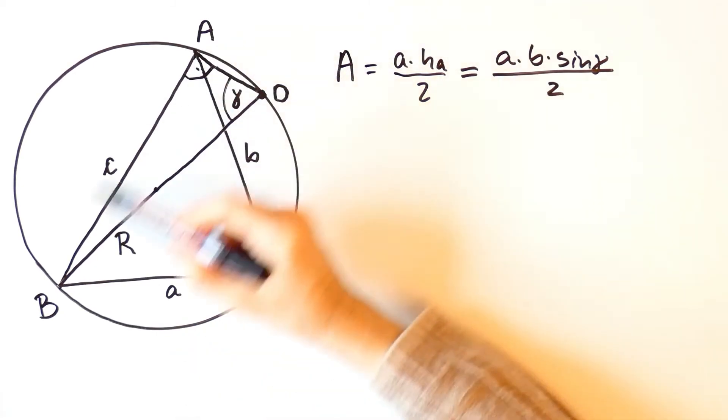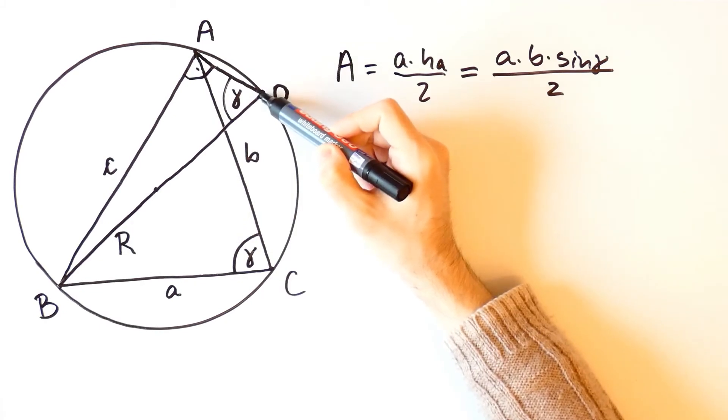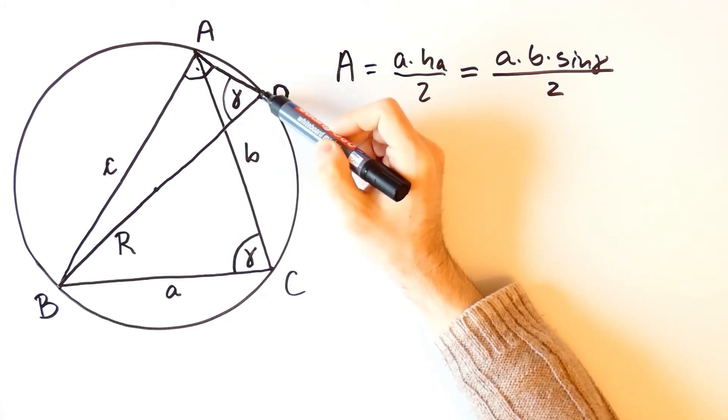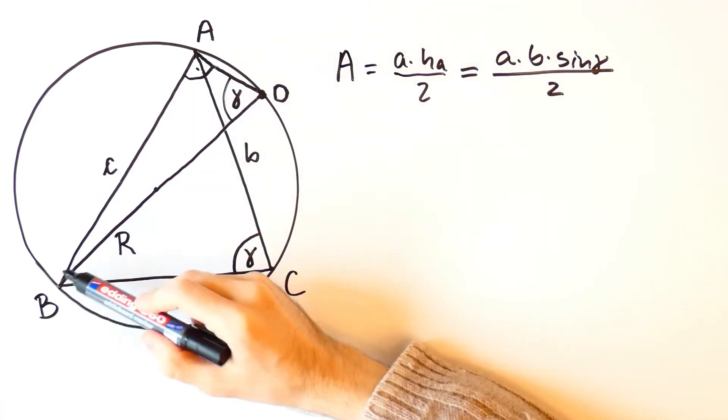That means that the triangle ABD is a right triangle whose one angle is gamma, so the sine of gamma is equal to AB over BD.